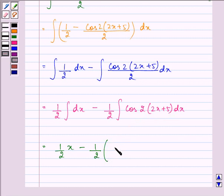sorry 2 theta will be equal to, here theta is 2x plus 5. Sin theta can be written as 4x plus 10 divided by 4 plus c.